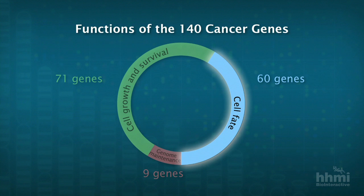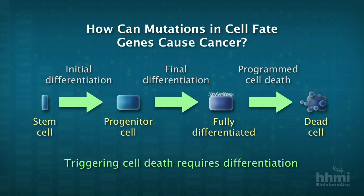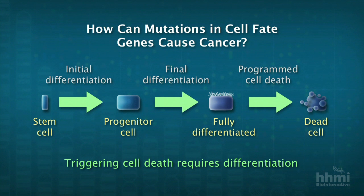The third category — a big one at 60 genes as of this update — I've called cell fate. What do I mean by cell fate? I'm talking about the process by which a stem cell from a tissue differentiates, gives birth to progenitor cells, which then further differentiate into mature cells of whatever tissue that is.